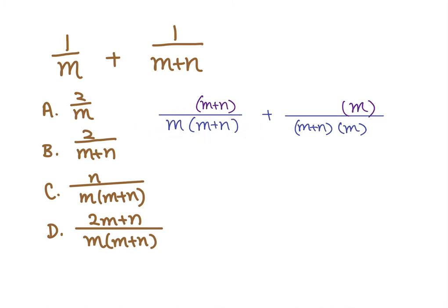Denominators are the same: M times M plus N. See, M times M plus N. Alright, when the denominator is the same, we can combine them. Combine means that we have to add them. So M, M plus N. And then up to the top, we can add up to the top. So it will be M plus N plus M. What happened? 2M plus N.